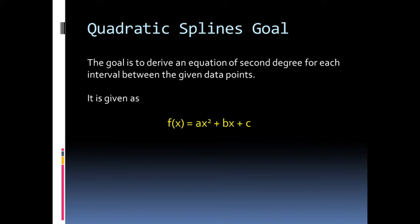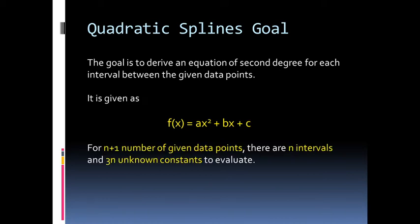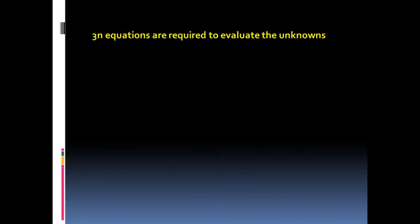This is the known quadratic equation. For n+1 number of given data points, there are n intervals that we can find and 3n unknown constants to evaluate. These 3n equations are required to evaluate the unknowns.